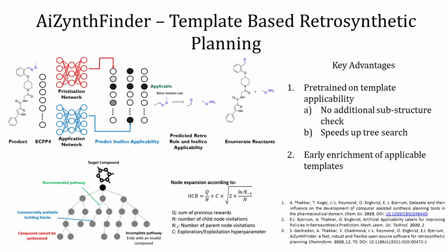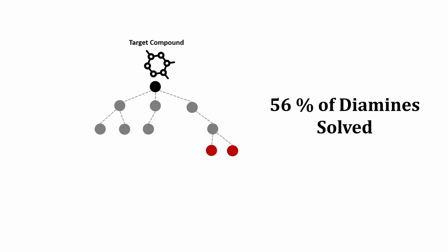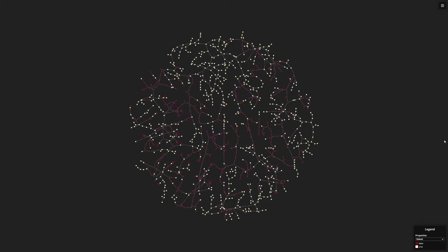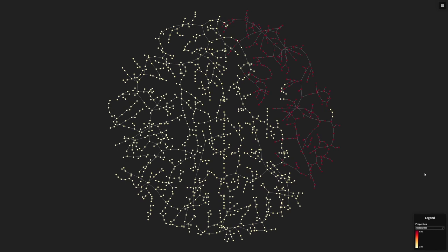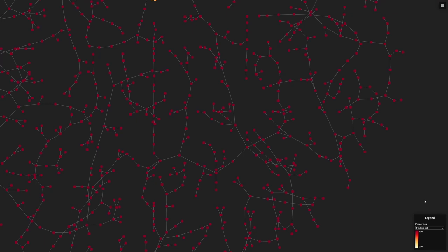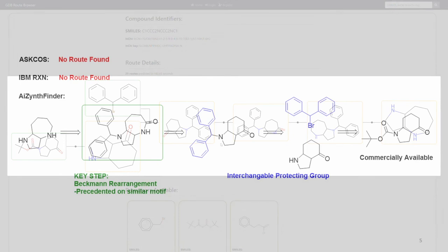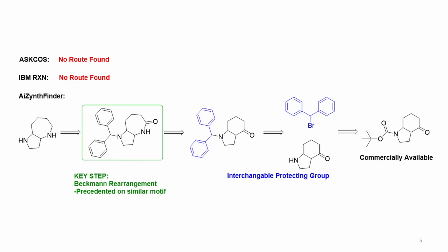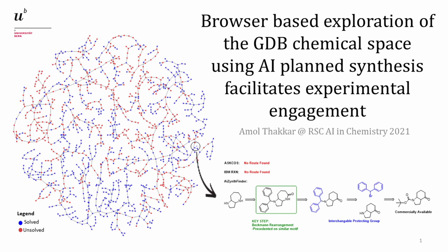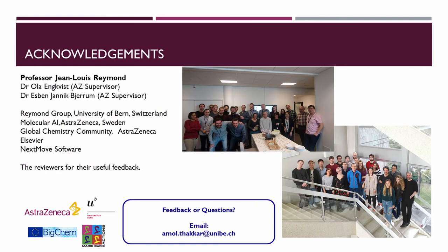We use this approach to predict multi-step synthesis routes to the compounds in the diamine database, resulting in routes for 56% of the compounds. We display the database using a T-map, which allows for coloring the space with molecular descriptors and statistics relating to the predicted synthesis routes for each compound. The interface additionally provides links to a database of pre-computed routes for synthetic chemists to examine. The key step is a Beckmann rearrangement, and routes could not be found with standard AI-SynthFinder, MIT's ASKCOS, or IBM Reaction. The route shown here was successfully synthesized in the wet lab. We've shown how we use AI-based synthesis planning to facilitate experimental engagement in the wet lab. Thank you for listening.